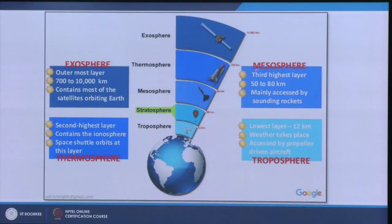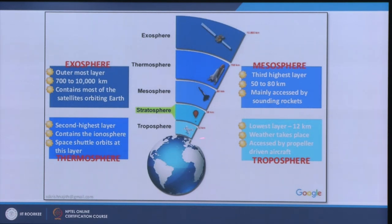The mesosphere is the third highest layer, 50 to 80 kilometers, mainly accessed by sounding rockets. In typical satellite-based remote sensing, signals have to pass through this layer but we do not have any sensors in this range. Then comes the stratosphere, and the troposphere is the lowest layer where maximum weather activity occurs — clouds, dust, fog, and similar phenomena are present very close to the earth's surface.